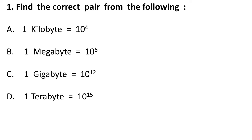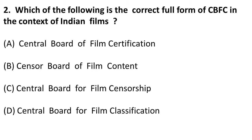The correct pair is one megabyte equals one million characters, i.e., 10 raised to power 6. For gigabyte it is 10 raised to power 9, for terabyte 10 raised to power 12, and for kilobyte 10 raised to power 3. If you have any doubt, ask in the comment section.